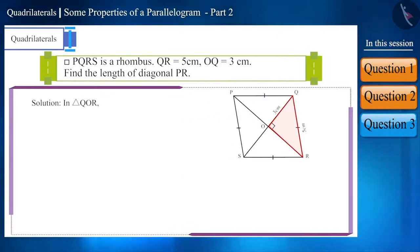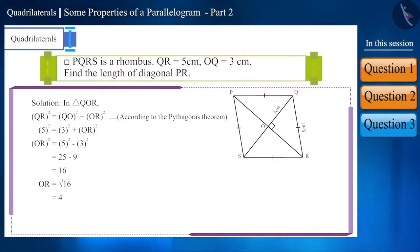So, in triangle QOR, the square of side QR will be equal to the square of QO plus the square of side OR, according to the Pythagoras theorem. Now, if we keep the value of these sides, we get OR is equal to 4 cm. And since PO is equal to OR, therefore, PO will be equal to 4 cm. Diagonal PR is equal to PO plus OR. Therefore, we get the length of the diagonal PR equal to 8 cm.